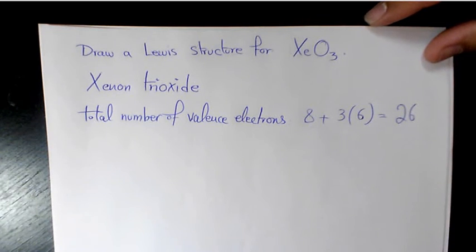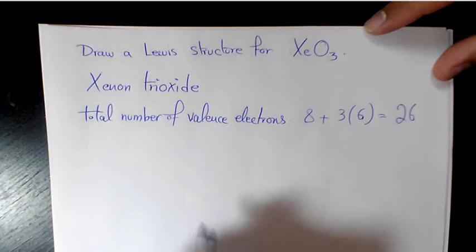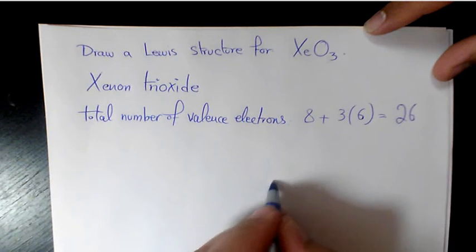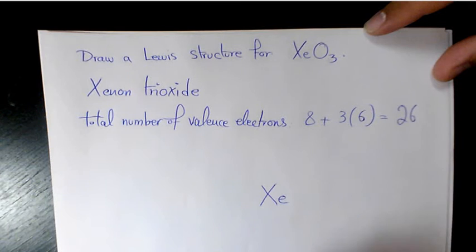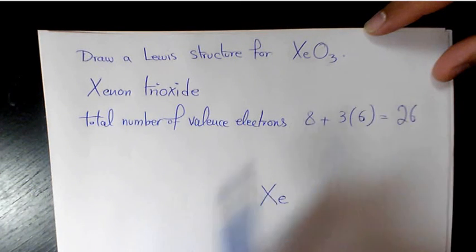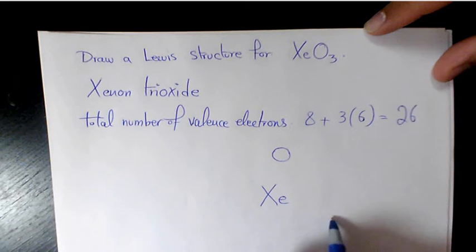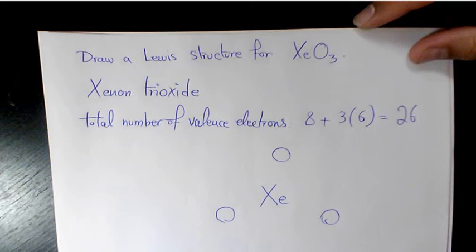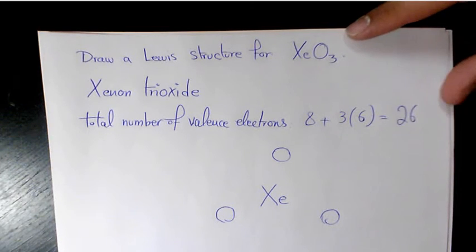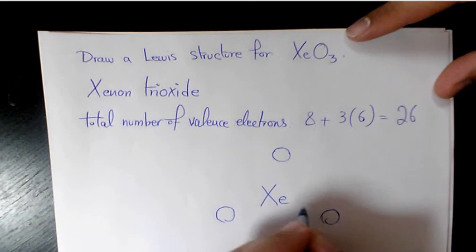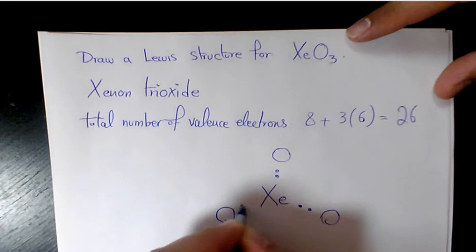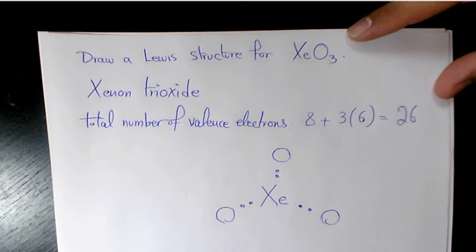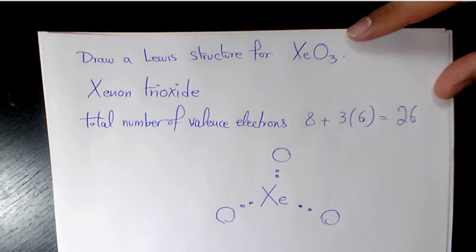That's the total number of available electrons. After that, we can put the central element, which is Xe in this case, because we have only one xenon and we have oxygens around it. Then we need to place one pair of electrons between each adjacent pair of atoms — every two dots represents a bonding electron pair that forms a single covalent bond.